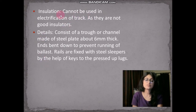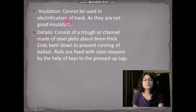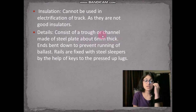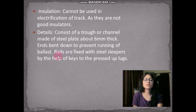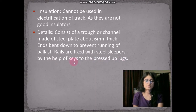Steel sleepers cannot be used in the electrification of the track because they are not good insulators. The trough or channel is made of steel plate about 6 mm thick, with ends bent down to prevent ballast running out. Rails are fixed with steel sleepers by the help of keys to press the plugs.